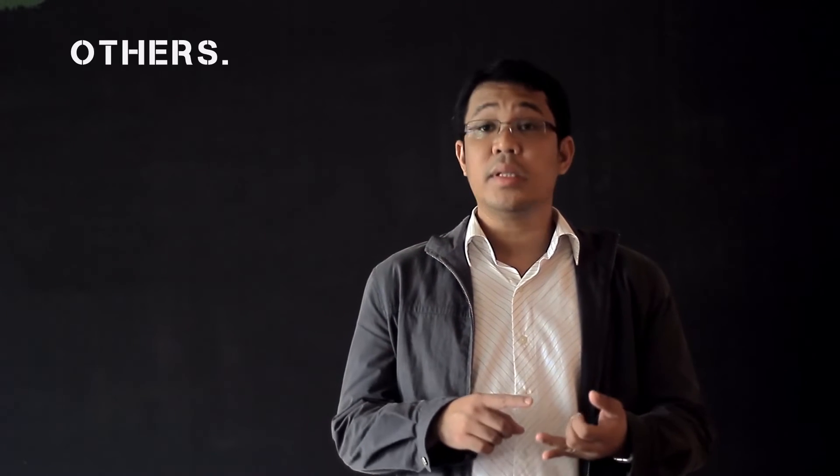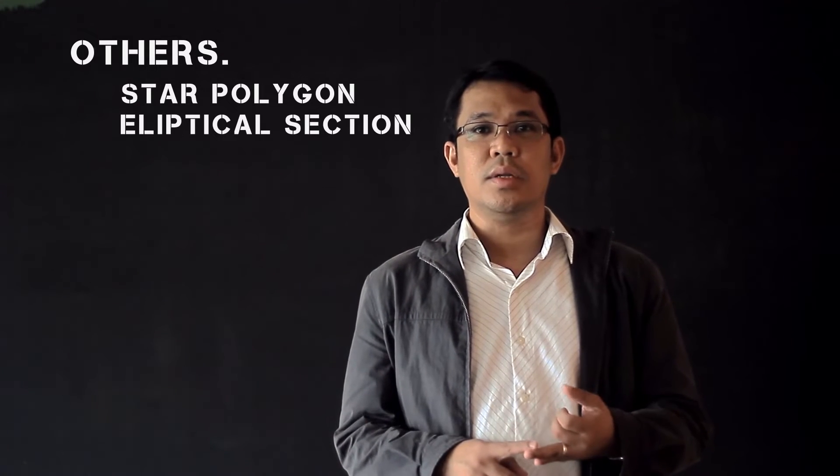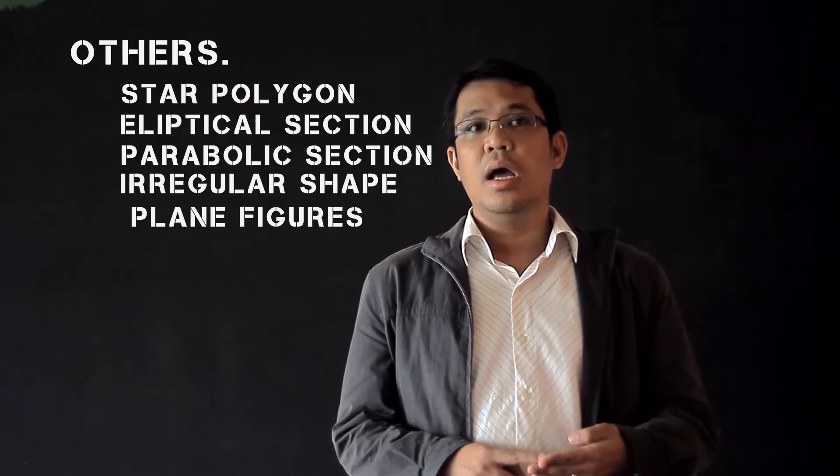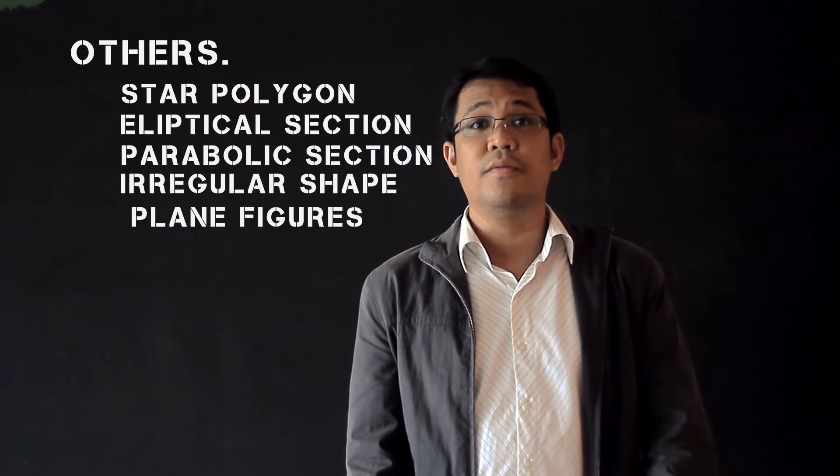Also in the first part, we will discuss circles. And after circles, we will discuss other types of plane figures that will include star polygon, elliptical section, parabolic section, composite plane figures, and irregular shaped plane figures.